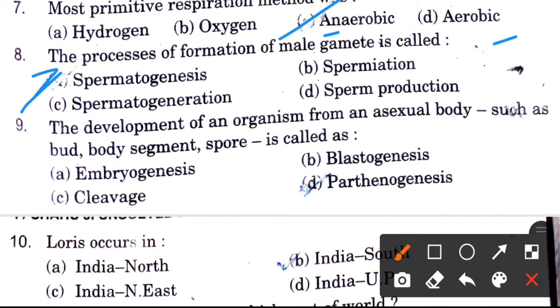The process of formation of male gametes — what is it called? Options are spermatogenesis, spermiation, spermatogeneration, and sperm production. The answer is spermatogenesis.